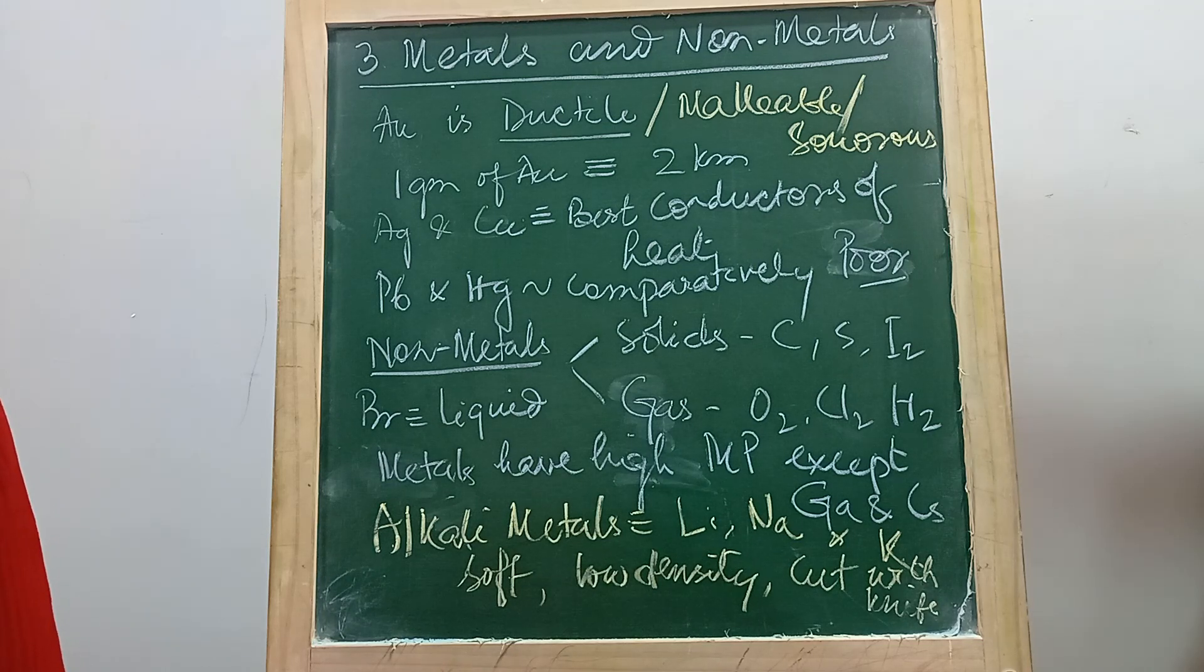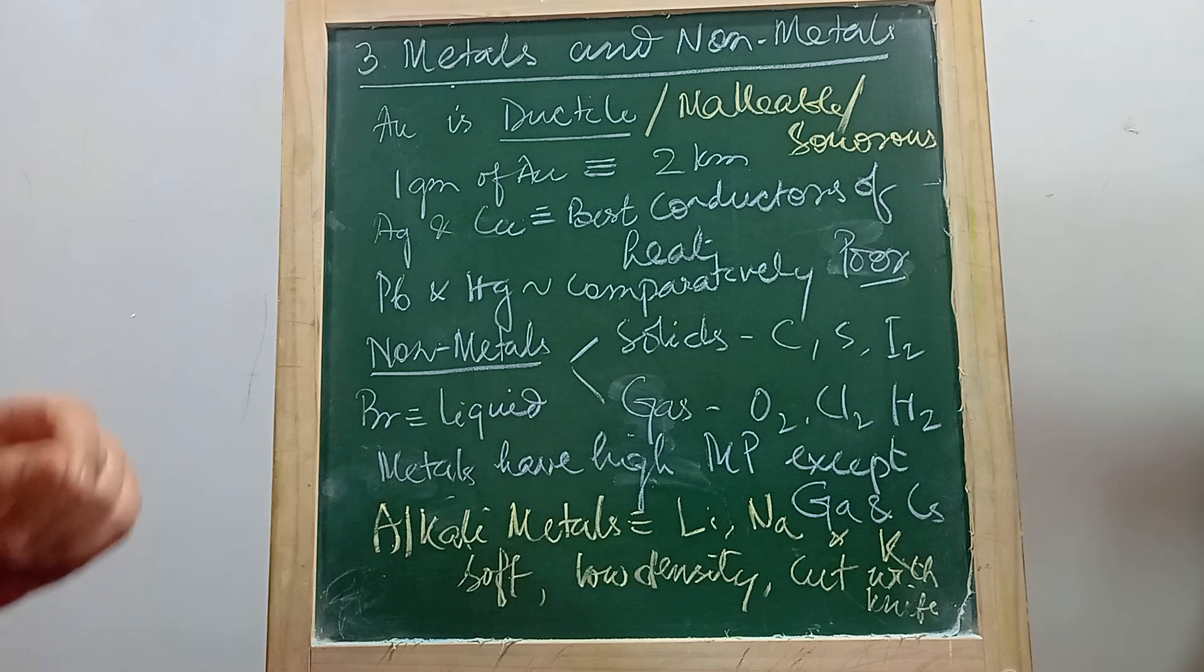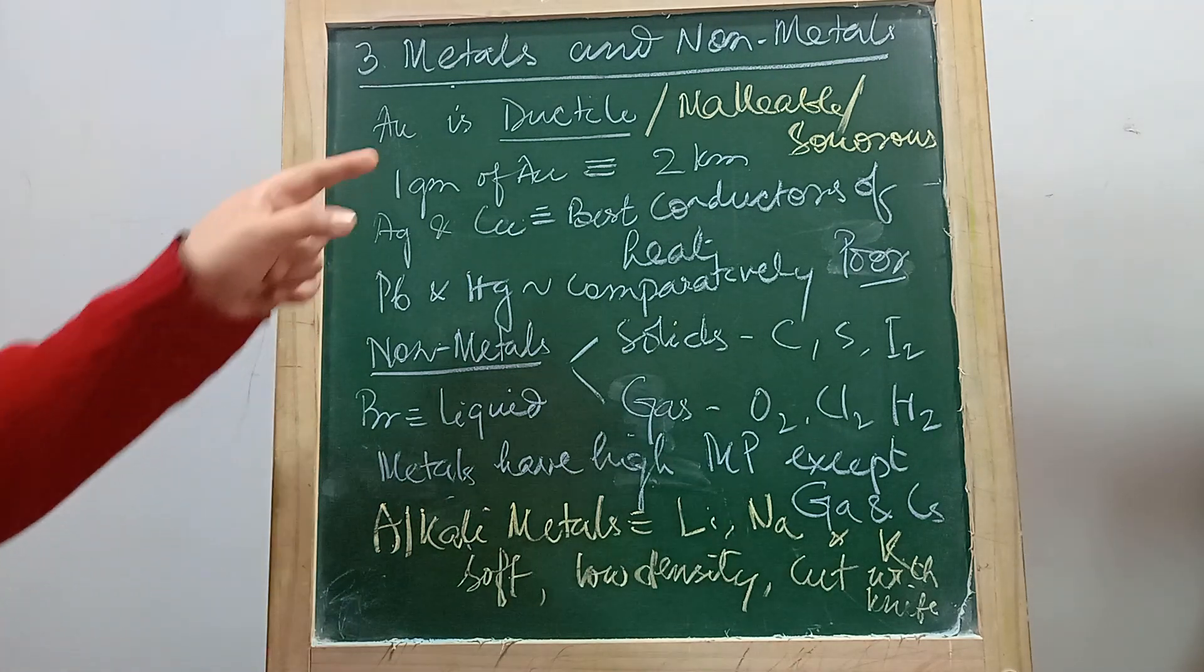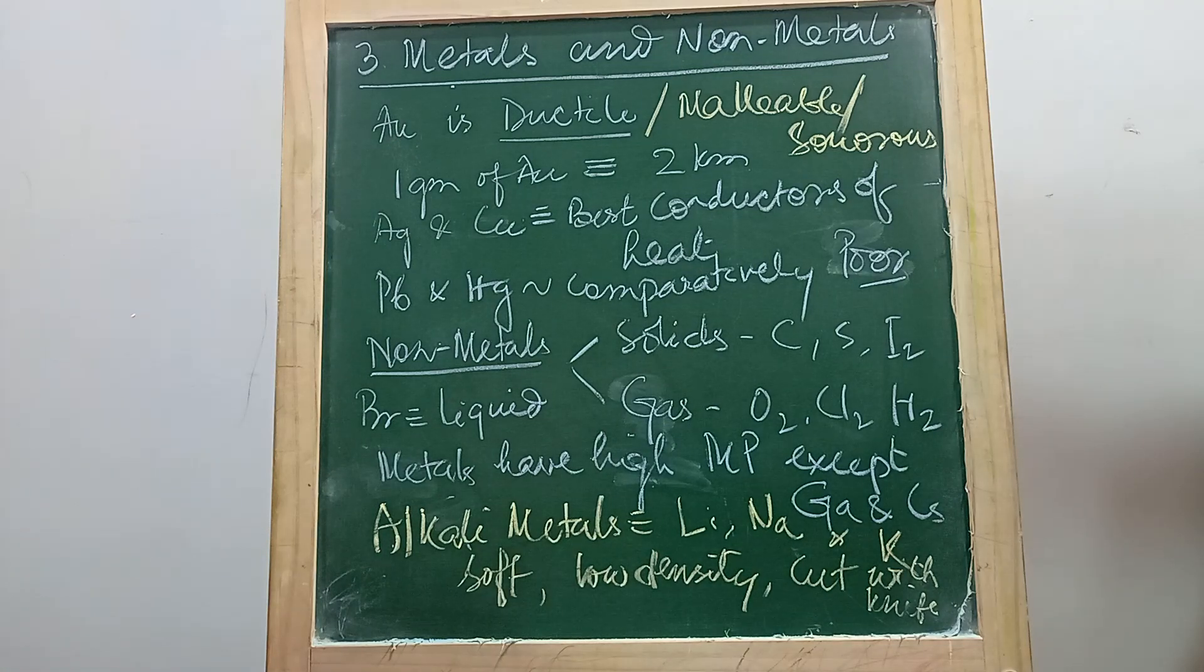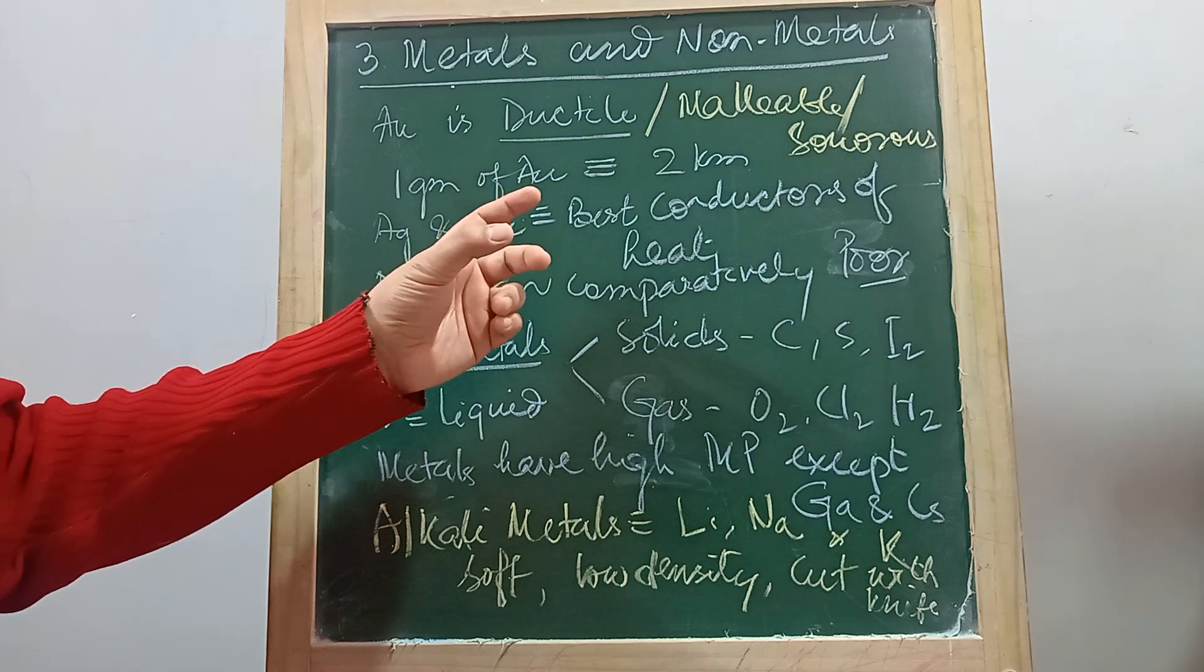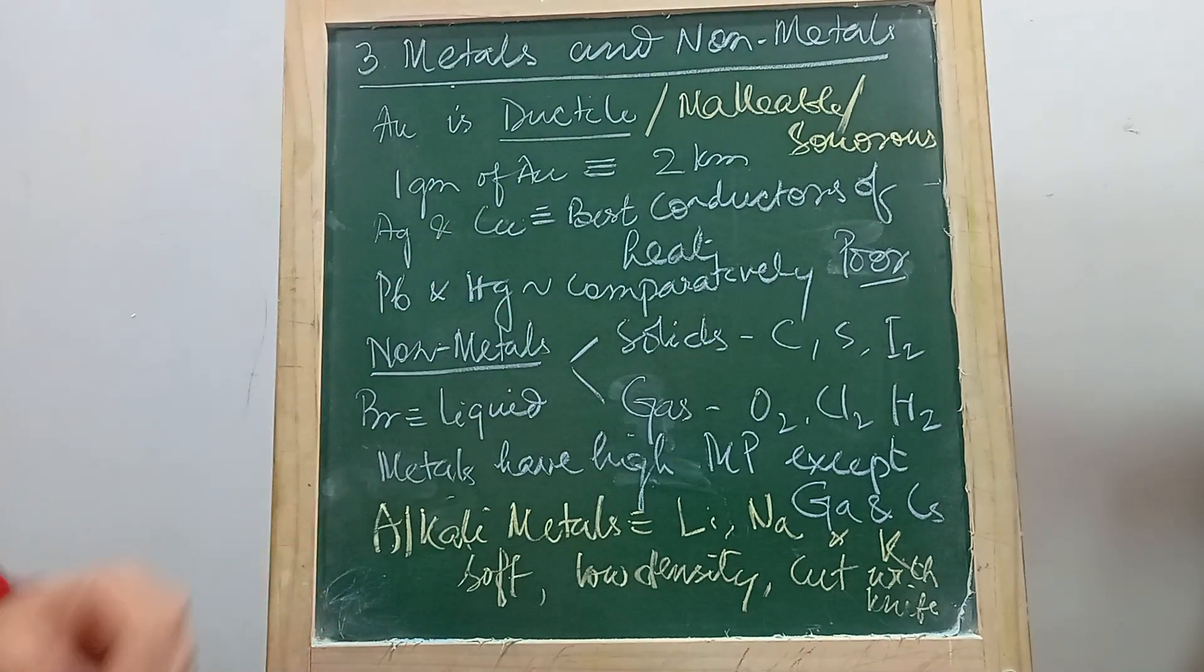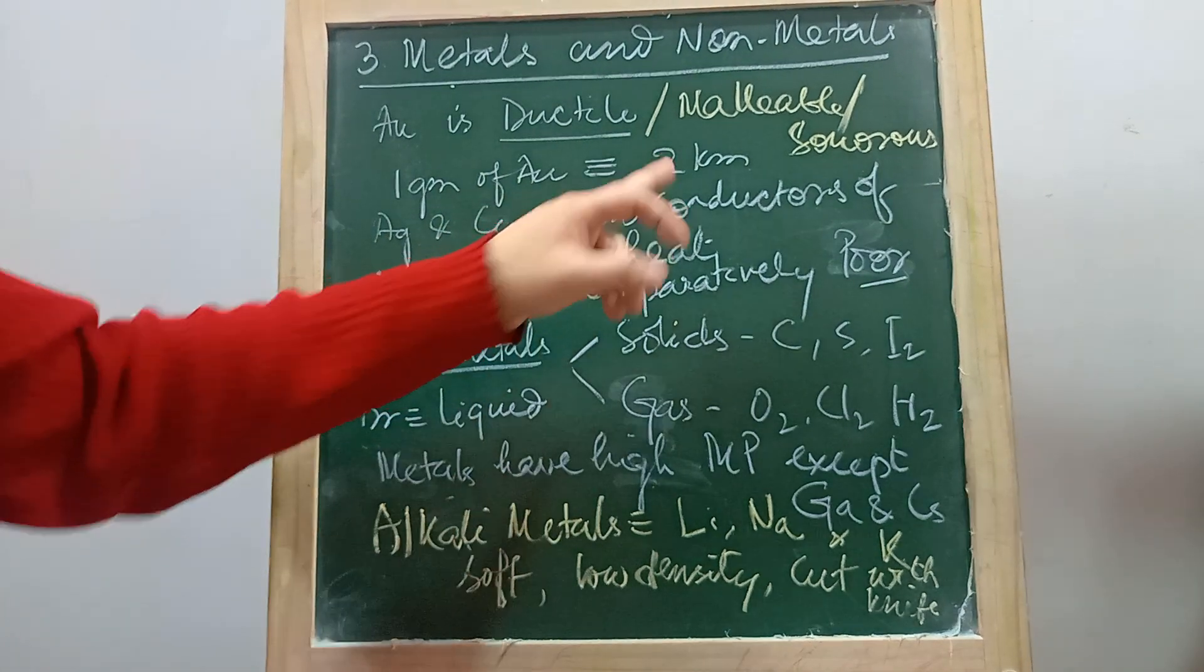One of the most important properties by which we can identify that this is a metal is that they are ductile. Ductileness, they can be drawn into thin wires. For example, gold, AU is gold and it is a very ductile metal. One gram of gold can be stretched, it can be drawn into wire up to a length of two kilometers.